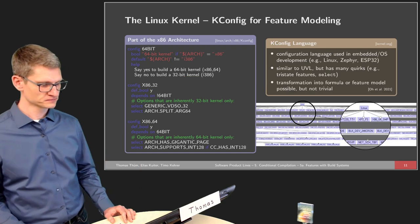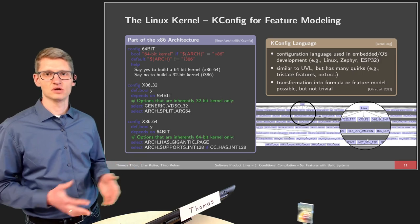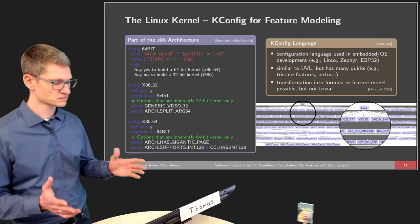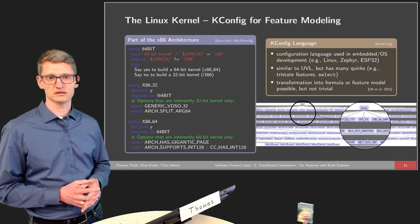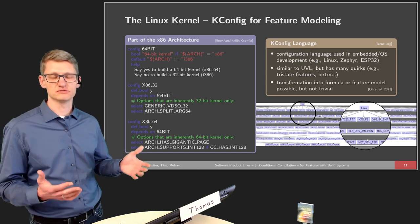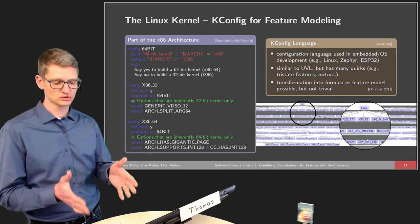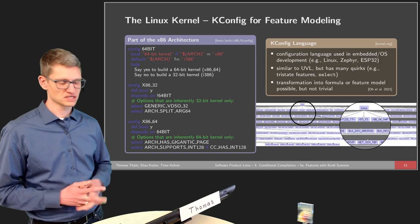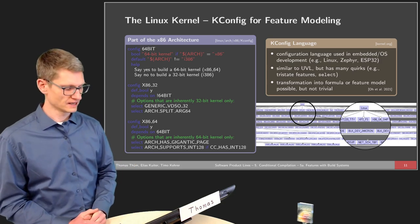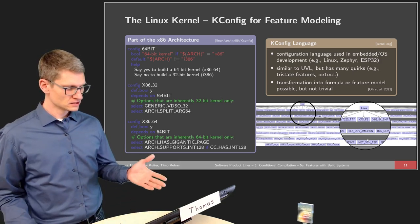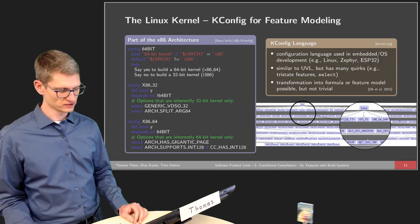Kconfig is a configuration language used in embedded systems and OS development — including Linux and other embedded systems. It is in some sense similar to UVL, but has many quirks that make it unique and harder to analyze. There has been a large research effort to identify the formal semantics of kconfig, and every couple of years researchers find the initial semantics was still wrong in some corner cases — this has happened over the past 10 to 20 years. In principle we can translate the model into a formula, but it's far from trivial.